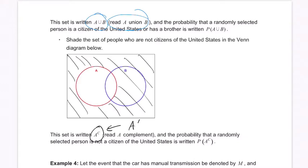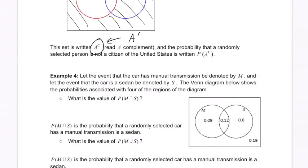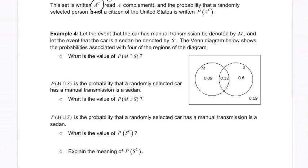All right, Example 4. Let the event that the car has manual transmission be denoted by M, so manual transmission right here. And the event that the car is a sedan, a four-door vehicle, is S. The Venn diagram below shows the probabilities associated with four of the regions of the diagram.